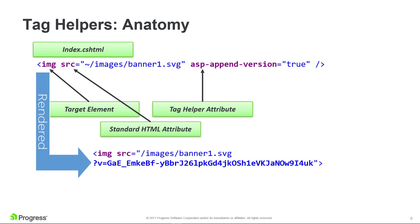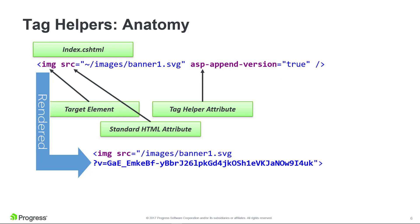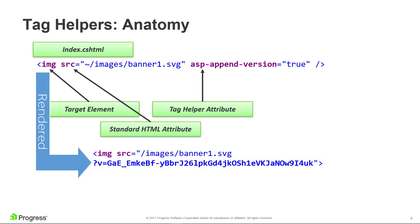Consider this HTML image tag example. ASP.NET Core ships with an image tag helper that understands the standard HTML src, or source, attribute. The tag helper extends the standard HTML image tag feature set by introducing an asp-append-version attribute. An SVG file path is provided to that standard source attribute. The asp-append-version attribute is added to enable cache busting of this static resource. We know this tag helper ships with ASP.NET Core because of the asp- prefixed attribute. Notice that the rendered markup includes a unique file version in the query string. The asp-append-version attribute doesn't appear in the rendered markup—it was merely a trigger to execute some C# code when set to true.